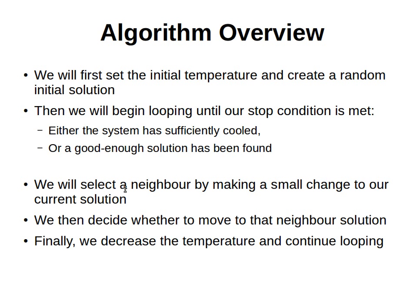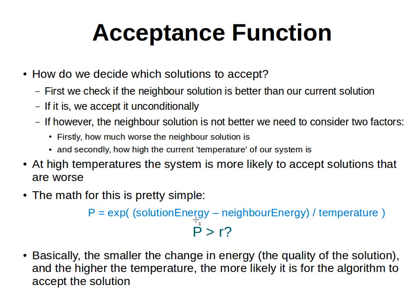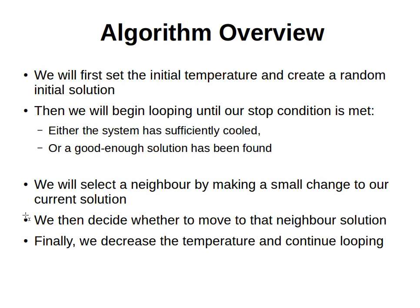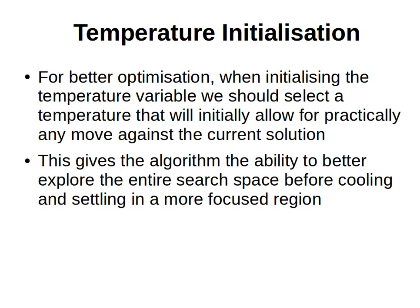While looping, we do the following: we select a neighbor by making a small change to our current solution, creating a slightly different neighboring solution. We then decide whether to move to that neighboring solution by computing its distance versus the current solution's distance and applying the probability formula. We calculate the probability P, generate a random number r, and check whether P is greater than r to accept or reject the new neighbor. Finally, we decrease the temperature and continue looping.